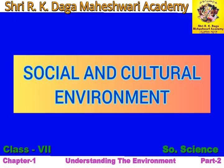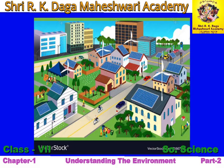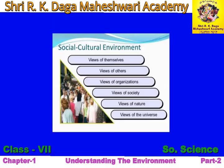Our next topic is Social and Cultural Environment. It is a part of the human environment. It is the sum of all learned behaviors that influence how a person thinks and behaves. This includes the family, community, rural and urban surroundings, countries, religions, and economic activities.